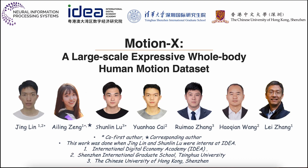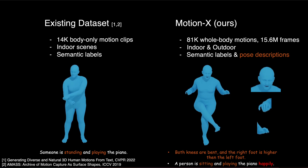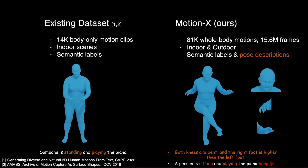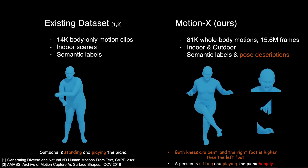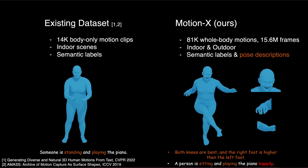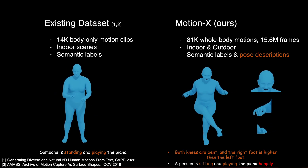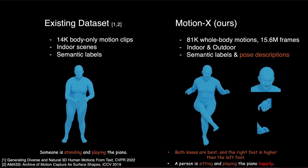We propose a large-scale expressive whole-body motion dataset, MotionX. Existing motion generation datasets predominantly contain body-only poses, lacking facial expressions and hand gestures. In contrast, MotionX contains 81,000 motion sequences and 15,600,000 frames with accurate body poses, facial expressions, and hand gestures.